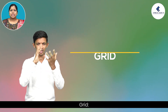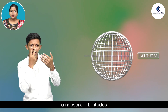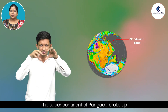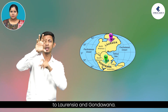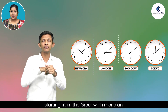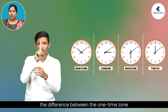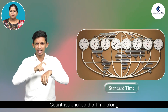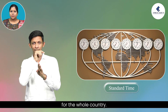Keywords. Grid: on a globe, a network of latitude and longitude is drawn — this is called a grid. Gondwana land: the supercontinent of Pangaea broke up into Laurasia and Gondwana. Time zones: the world is divided into 24 time zones starting from the Greenwich Meridian going east and west. The difference between one time zone and the next is one hour. Standard time: countries choose the time along one of the meridians that pass through their territory and follow the time of that meridian for the whole country.